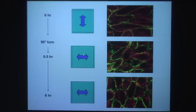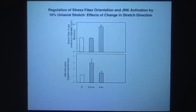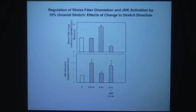To test this, we first stretched cells so stress fibers oriented perpendicularly, then suddenly changed the stretch direction by 90 degrees — now parallel to the current orientation. At 30 minutes the cells are in the process of re-orienting, with neither clear perpendicular nor parallel alignment. But after six hours with the new direction of stretch, the cells once again align perpendicular to the new stretch direction.